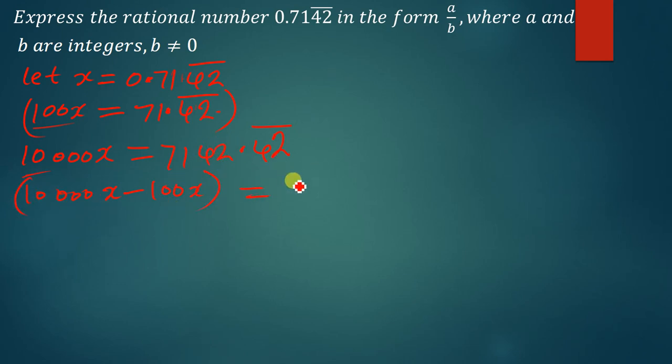This is equal to, we subtract 7142.42 bar minus 71.42 bar. So this is what we're going to have.